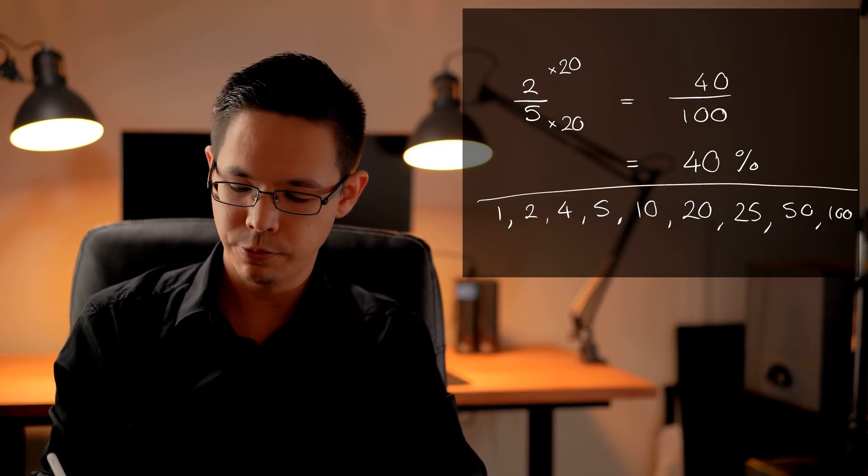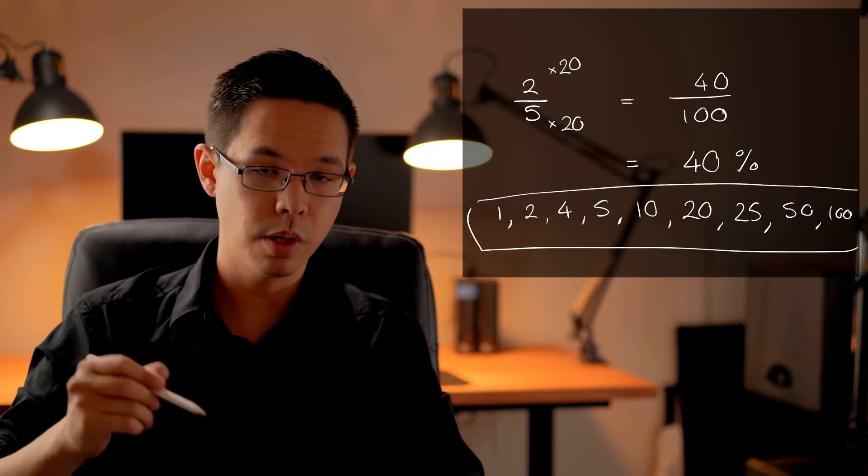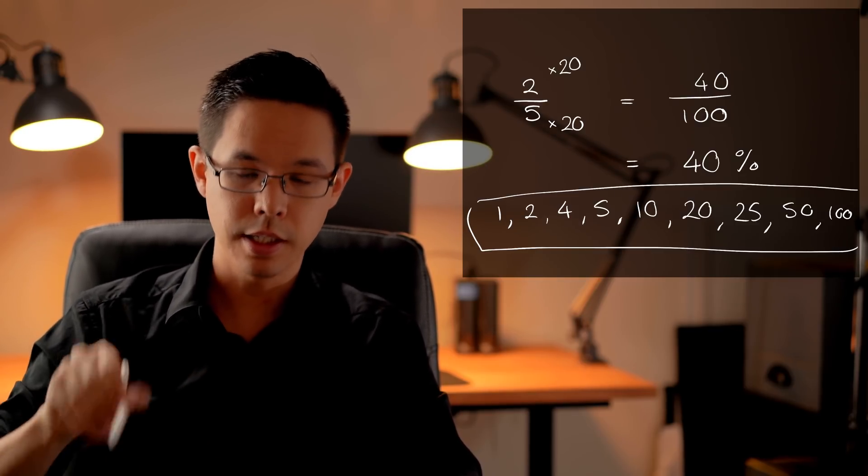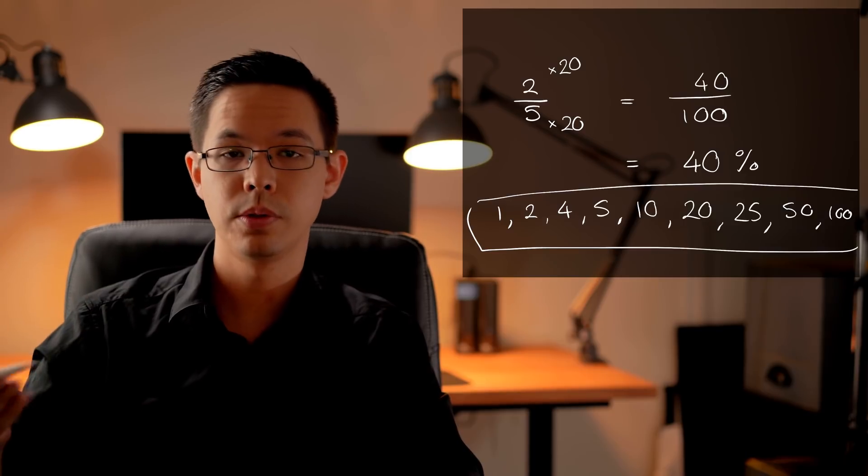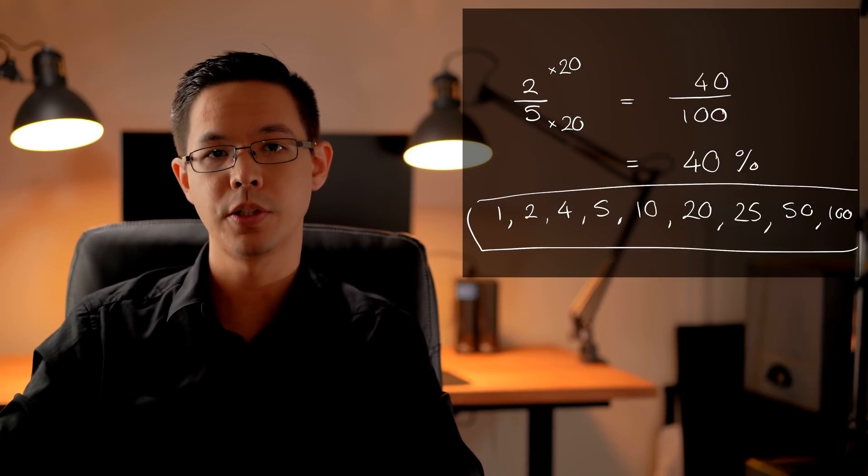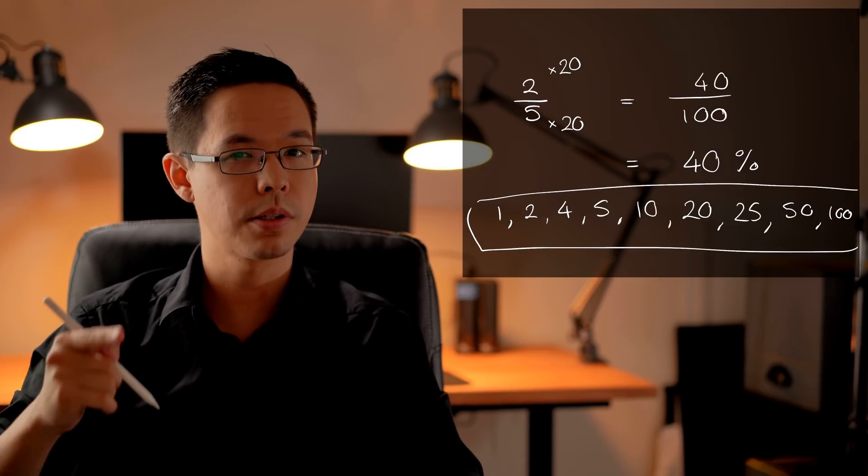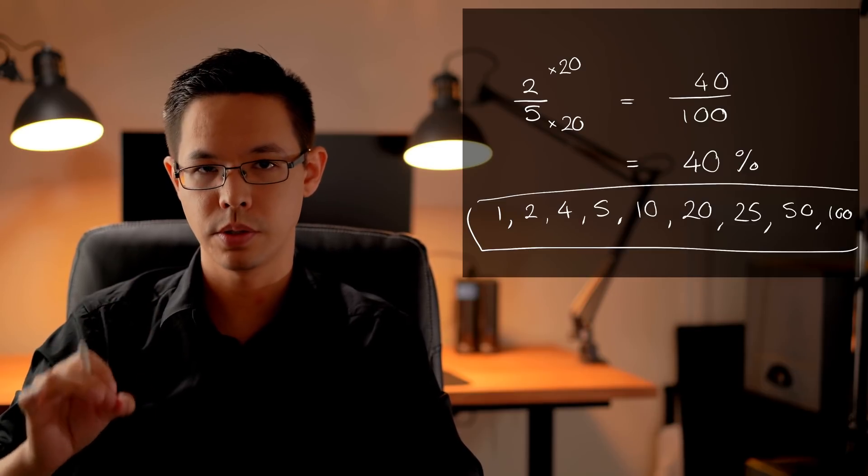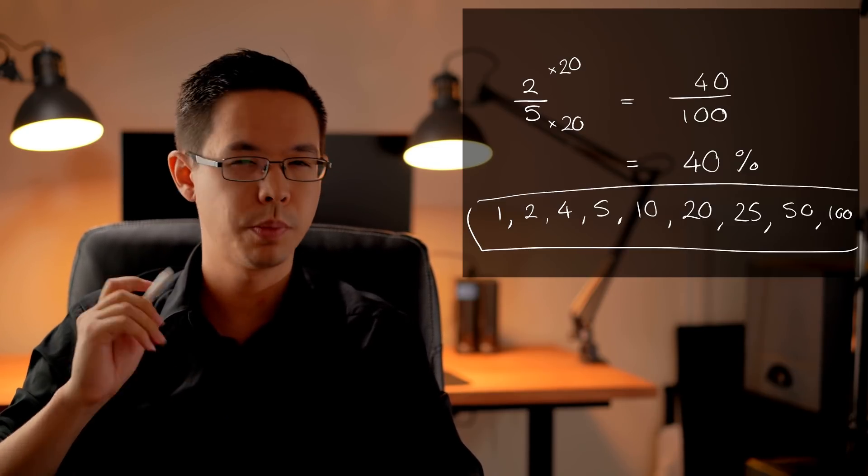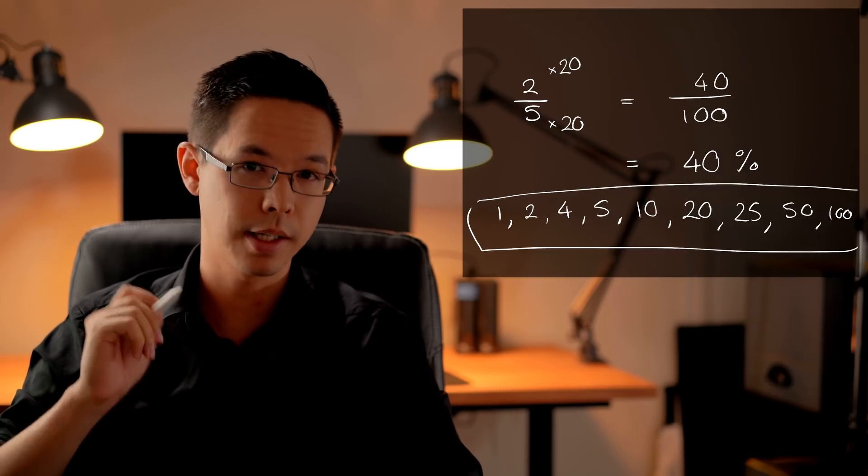These are all factors of 100 so if the denominator that you're looking at has any of those then you know straight away that they can easily multiply it up. But some cases they're not so easy where they are not one of those factors of 100. So what do we do then? We've got a different trick. Let me get into that next.